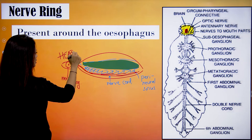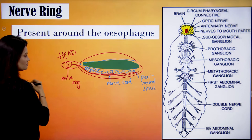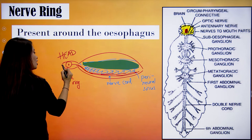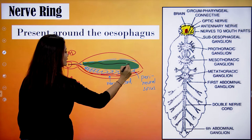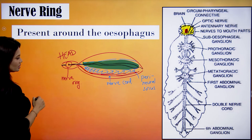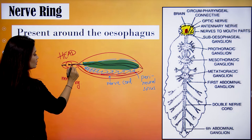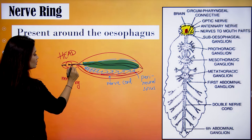In the head region, the mouth and digestive system start. The mouth, pharynx, and esophagus pass through — ultimately leading to crop and gizzard and the whole digestive system. You can see how the nerve ring is around the esophagus and how the digestive system is passing through that nerve ring.